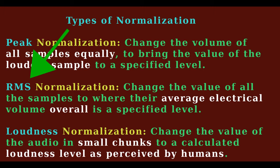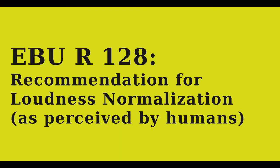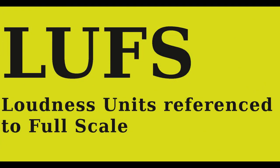A detailed layman's description of RMS is in the e-book VoiceOver on Linux. Loudness normalization changes the value of the audio in small chunks of 400 milliseconds to a calculated loudness level as perceived by humans. Loudness measurements are based on the EBU-R128 recommendation, which in turn is based on the International ITU-R BS.1770 recommendation. These use the loudness measures of LU (loudness units) and LUFS (loudness units referenced to full scale). For brevity, I like to call loudness normalization LUFS normalization.